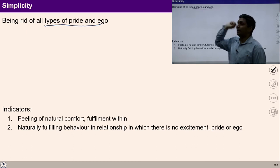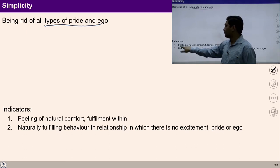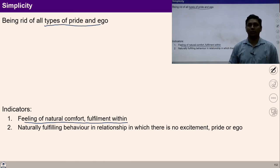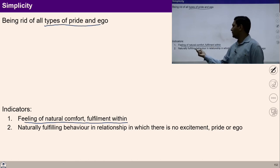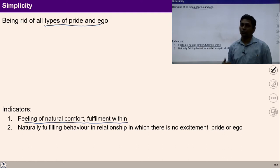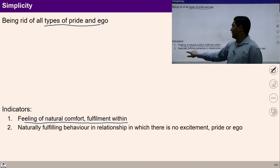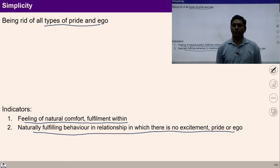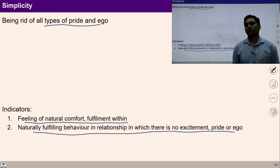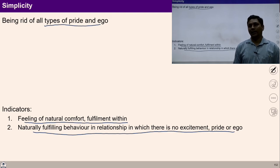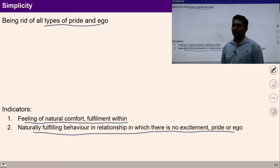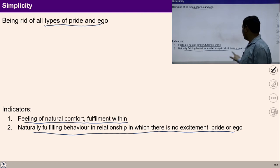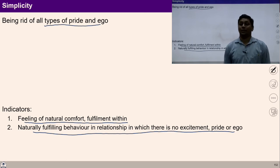What are the indicators of simplicity? Number one, a feeling of natural comfort and fulfillment within me — I feel comfortable naturally in myself. And naturally fulfilling behavior in relationships with no excitement, no pride, no ego, because I know this is my participation, this is my duty and obligation. Now I am participating with human beings and the rest of nature, free from ego and excitement. This is simplicity.